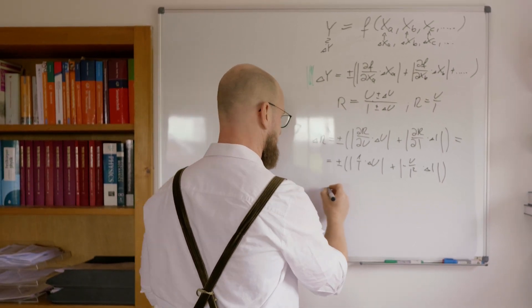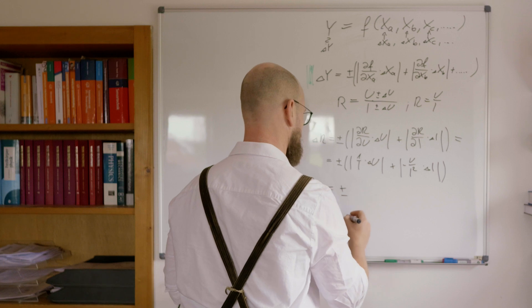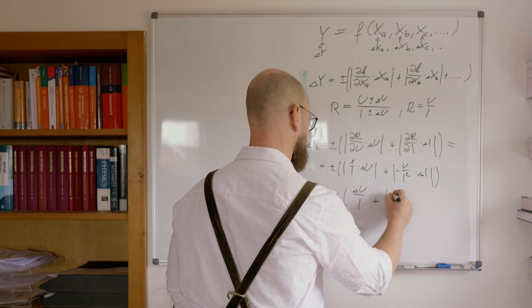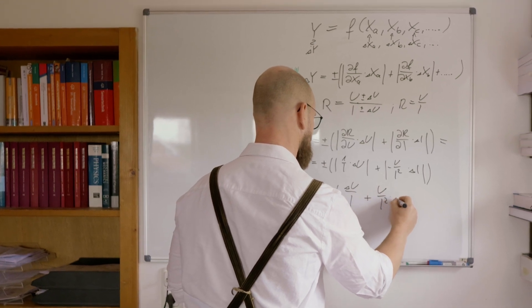Awesome. So, we get an error, which is plus minus delta U over I, plus U over I squared, times delta I.